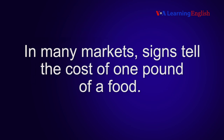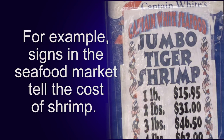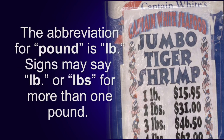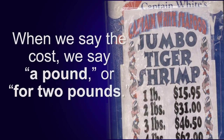In many markets, signs tell the cost of one pound of a food. For example, signs in the seafood market tell the cost of shrimp. The abbreviation for pound is LB. Signs may say LB or LBS for more than one pound. When we say the cost, we say 'a pound,' or for two pounds.